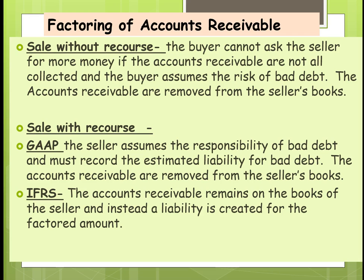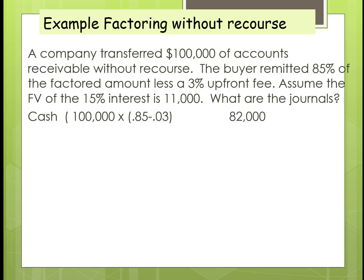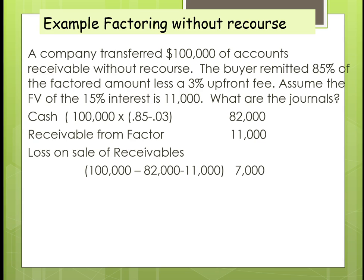Let's go through all three examples. A company transfers $100,000 of accounts receivable without recourse. The buyer remitted 85% of the factored amount less a 3% upfront fee to cover returns and allowances. Assume the fair value of the 15% interest is $11,000. You would receive cash of 82% — that is, $82,000 — the receivable from factor is $11,000, and the loss on sale of receivables is normally your plug. The accounts receivable that comes off the books is $100,000. You book your cash and receivable from factor, and then the difference is your loss.